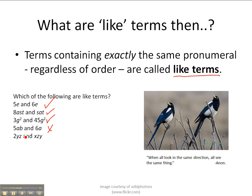The last example, 2yz and xzy. This has got two pronumerals, y and z. This term over here has got y and z, but it's also got an x. These are not exactly the same, therefore it's not a like term.